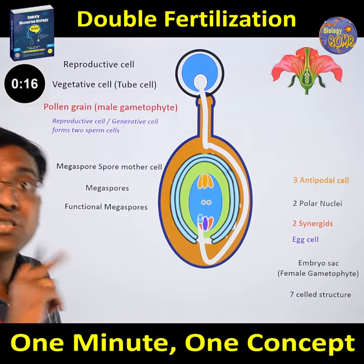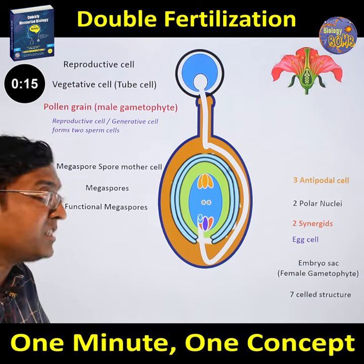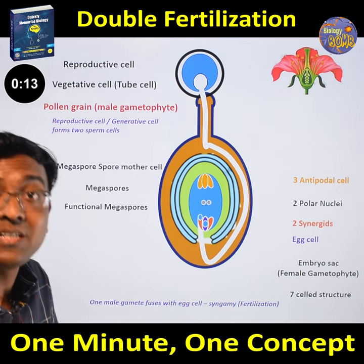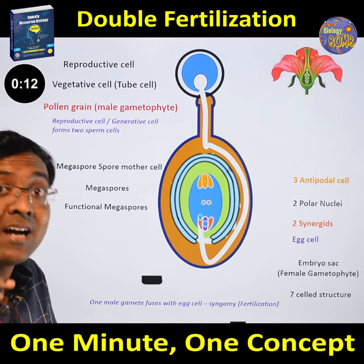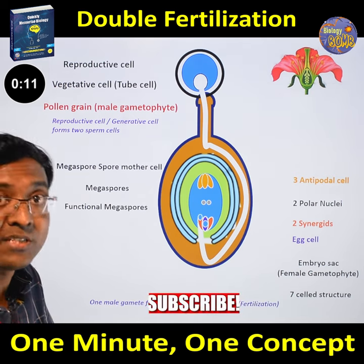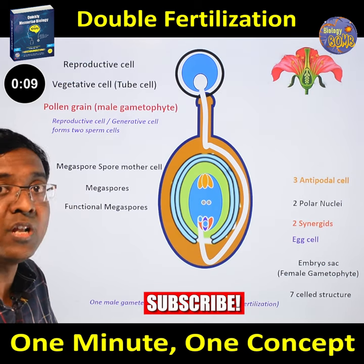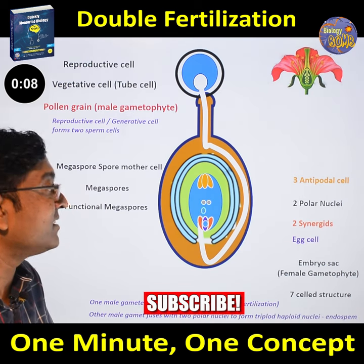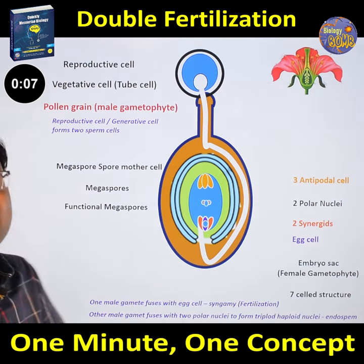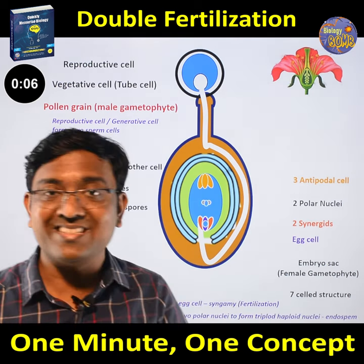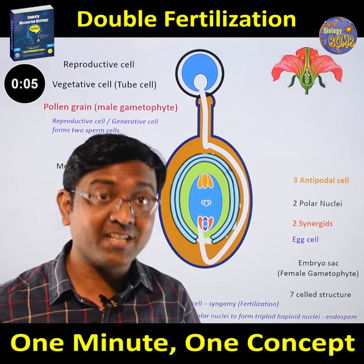One of the sperm cells fuses with the egg cell nucleus — this is the first fertilization. And another sperm cell fuses with the 2 polar nuclei — this is the second fertilization. That is why this is called double fertilization.